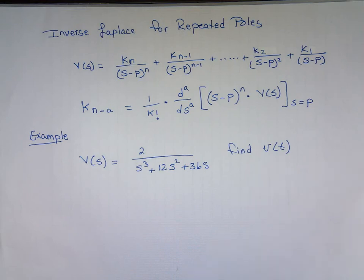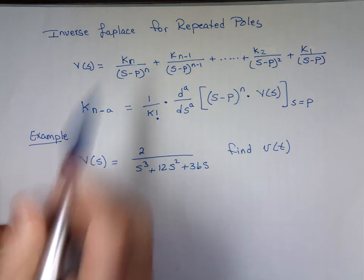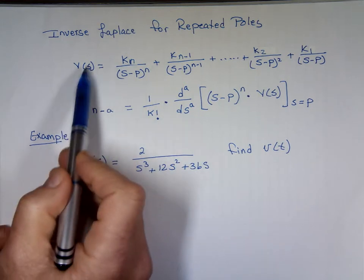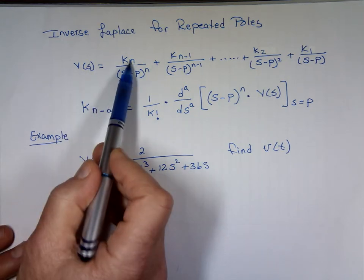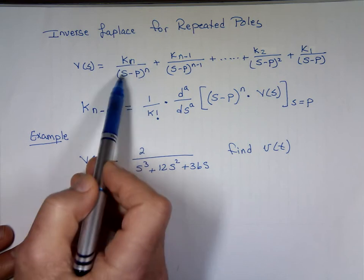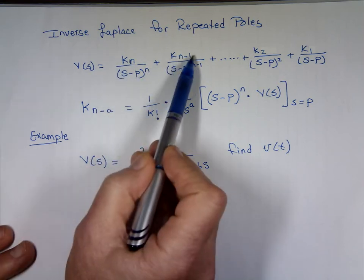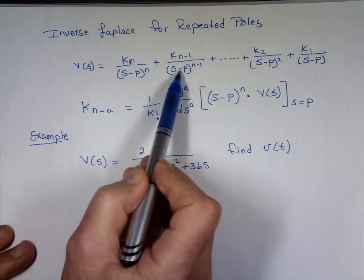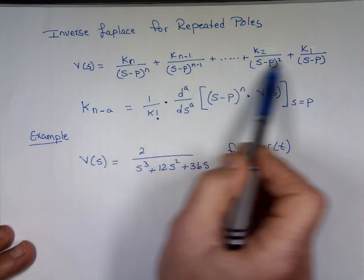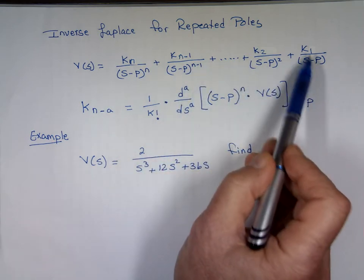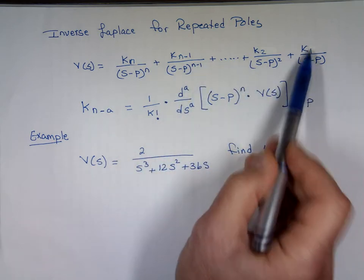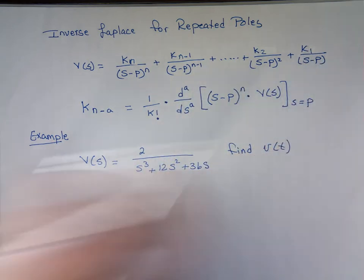So how do we take the inverse Laplace when you have repeated roots? If I have this function V(s) equals k_n over (s minus p) to the n, plus k_{n-1} over (s minus p) to the n-1, all the way to k_1 over (s minus p) to the 1.